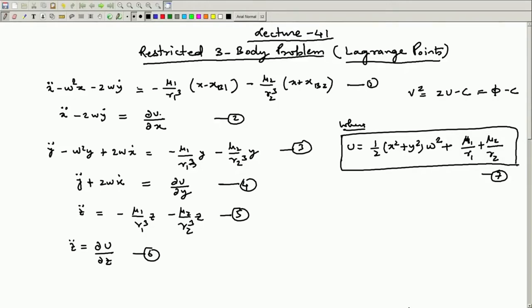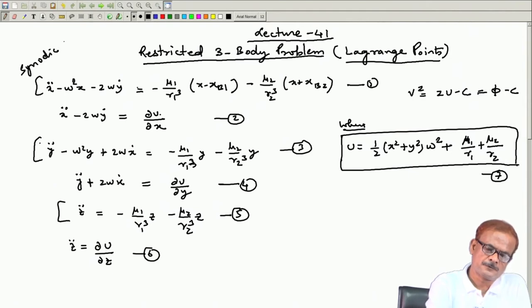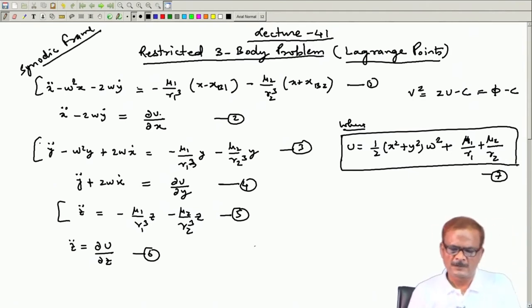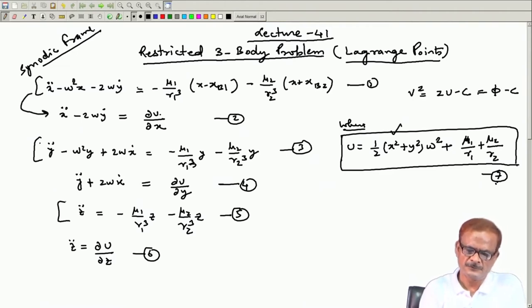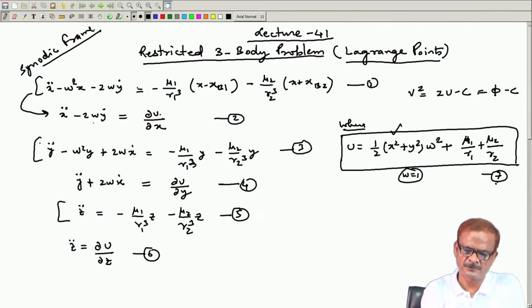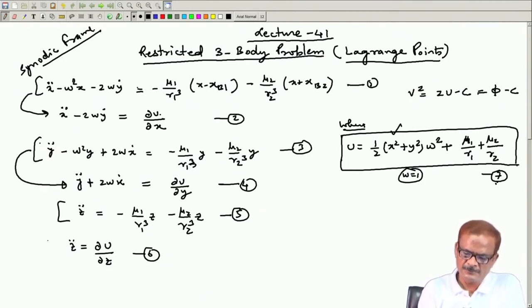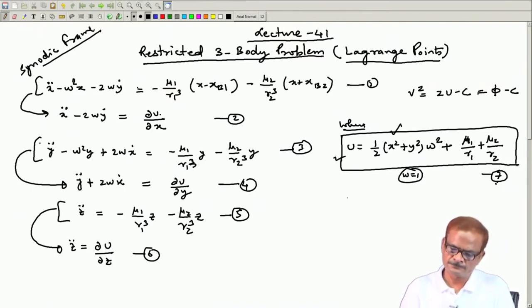Recalling what we have done earlier: these are the equations of motion we derived in the synodic frame. If we assume u given by the expression in equation number 7, the same equations can be reduced to the form x-double-dot minus 2*omega*y-dot equals partial-u/partial-x. In the case omega equal to 1, this simplifies further, and both the x and y equations get reduced to a simplified format.